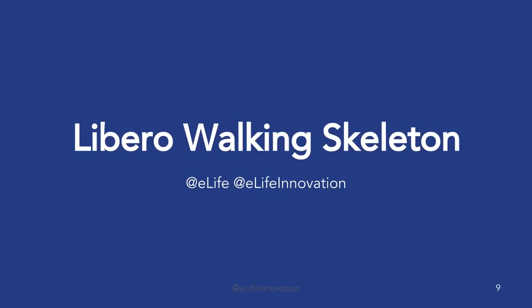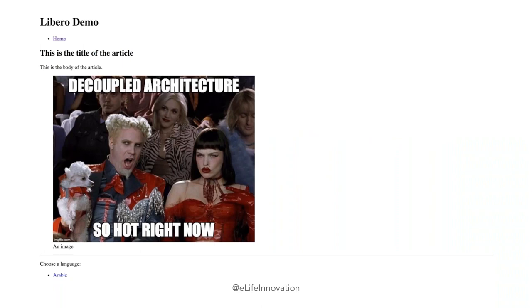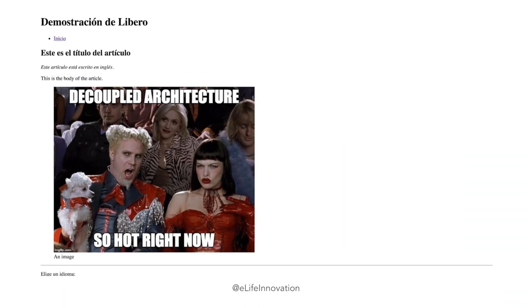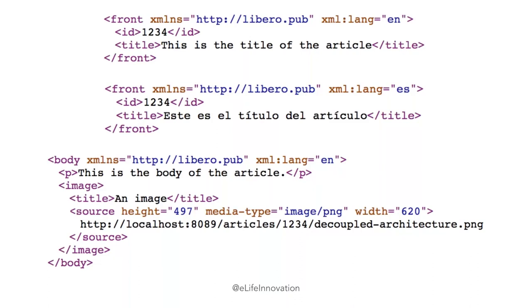They've built what they call their walking skeleton — a working prototype without any meat on the bones. A basic article shows you can add images in different languages. The same article can be viewed in Spanish. This is one of the fundamental changes since evolving from what is currently powering eLife. Different namespaces within the API responses in the XML allow the front matter to be available in different languages.